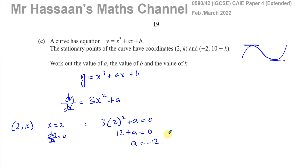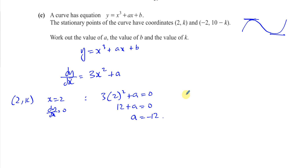We would get the same result using the other stationary point, since that is also where the gradient equals zero. Putting minus 2 in gives minus 2 squared which is 4, and 3 times 4 is 12, giving a equals negative 12. So the equation is now y equals x cubed minus 12x plus b, since we can replace a with negative 12.